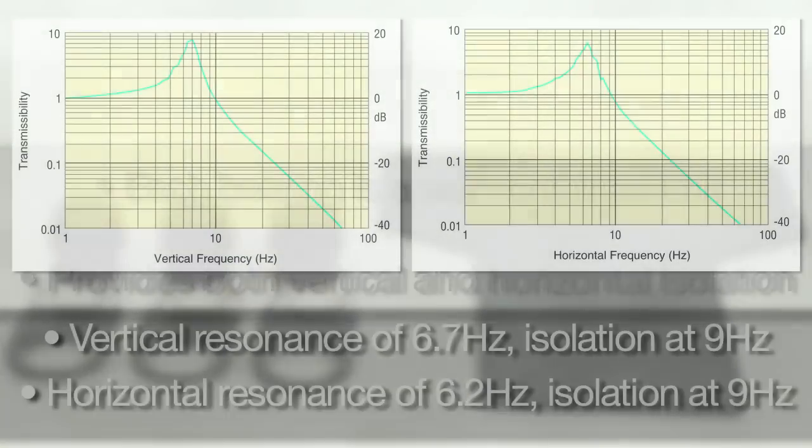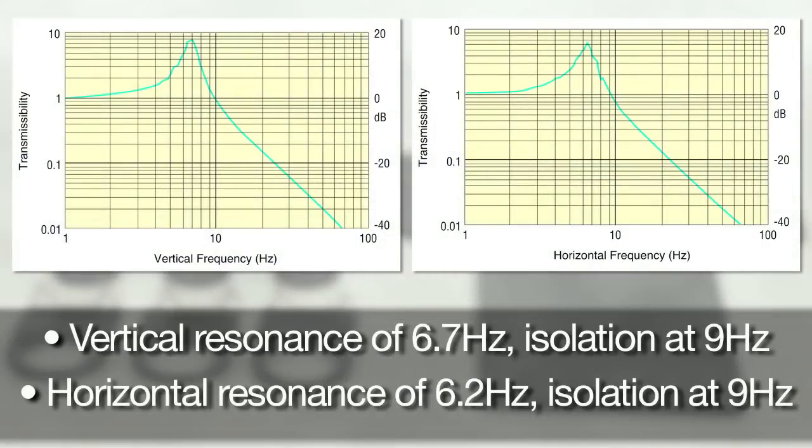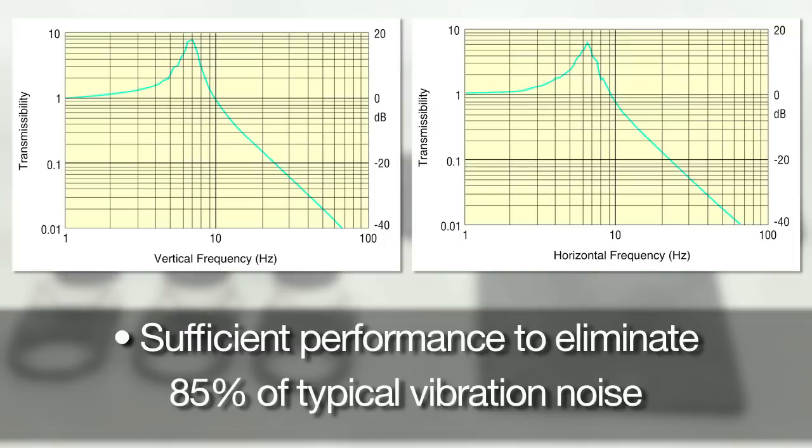The isolators feature a 6.7 Hz vertical resonance frequency that begins isolating at 9 Hz, and a horizontal resonance of 6.2 Hz, with isolation beginning at 9 Hz. This is sufficient performance to eliminate more than 85% of vibration noise seen within typical laboratories.